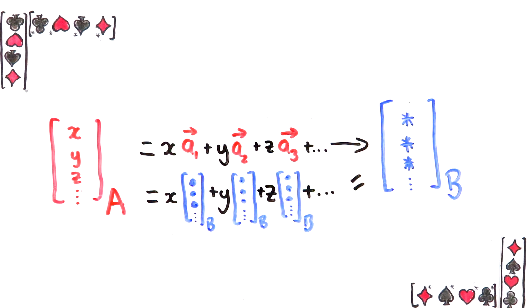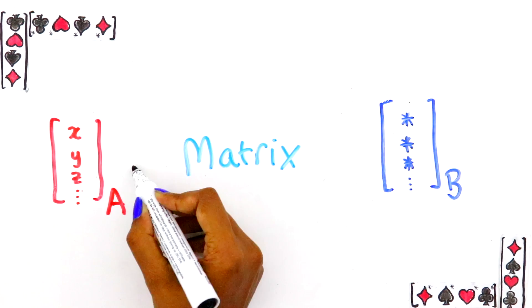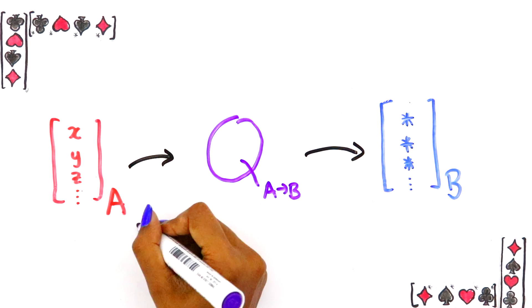We could leave this here and be happy, but there's a really convenient way for Alice to do all this translating. We could represent it as a matrix. As in, Alice just puts in her vector in her basis, and the matrix spits out what it should be in Bob's. We're gonna call this the change of basis matrix.